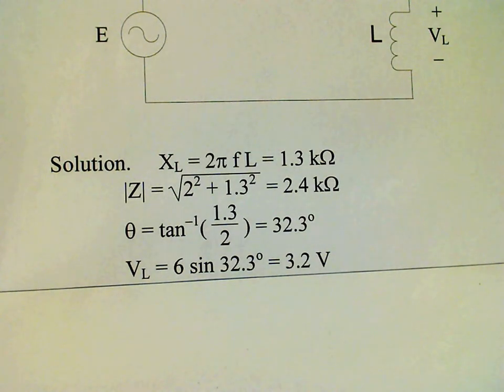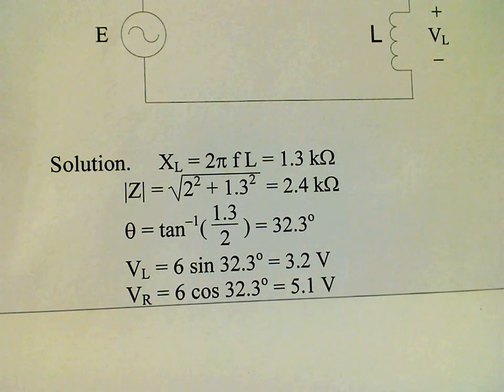The voltage across the resistor, VR, is 6 cosine theta, or 6 cosine 32.3 degrees, which is 5.1 volts.